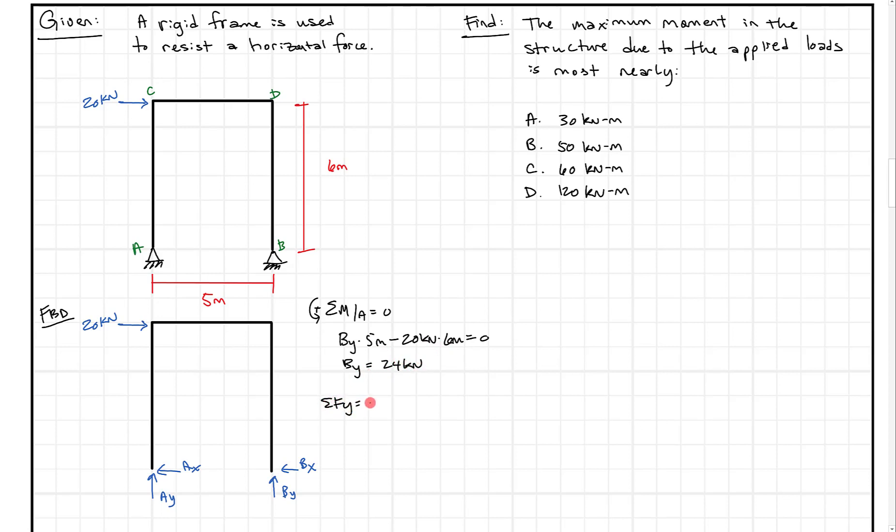Then we can go right to sum of the forces in the Y direction equals zero. Sum of the forces in the Y, we get AY plus BY equals zero. They're the only two vertical forces, so they have to equal each other. Except what we notice is AY really has to be like negative BY, because one has to go up, one has to go down for this thing to balance. You can kind of picture that, if you're trying to rotate this about point B because of this 20, AY really needs to keep pulling it down. So AY is going to be minus 24 kilonewtons.